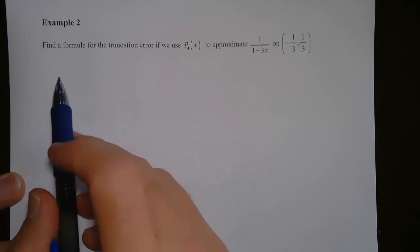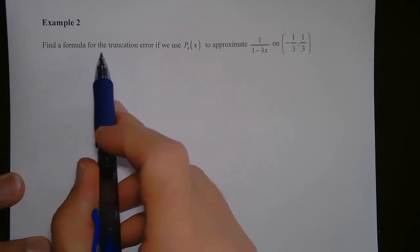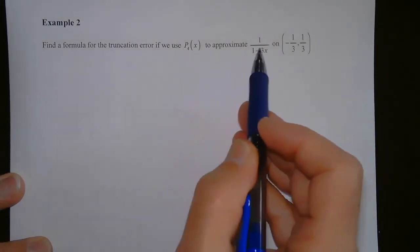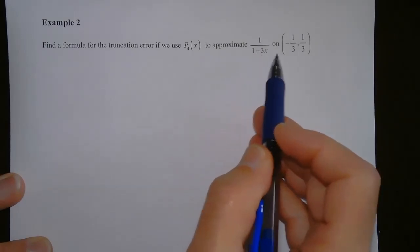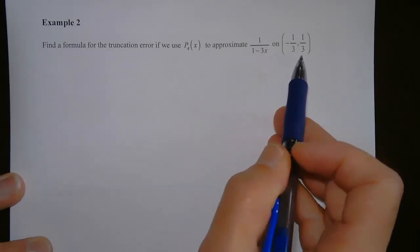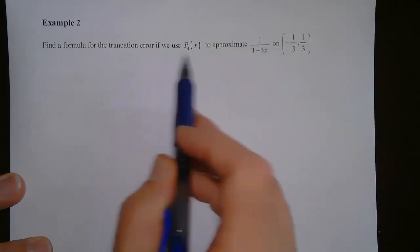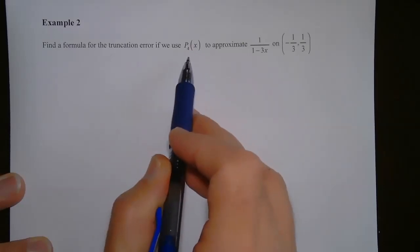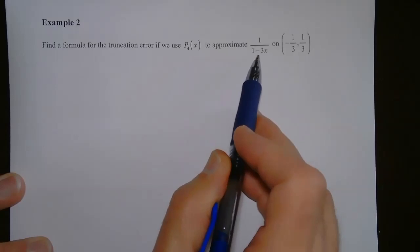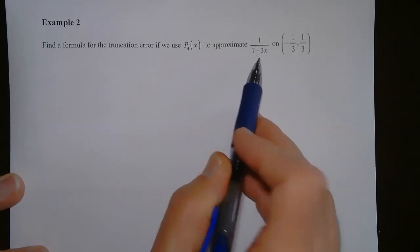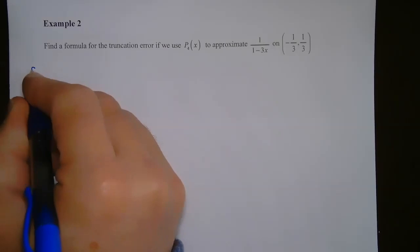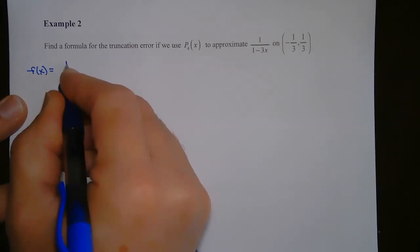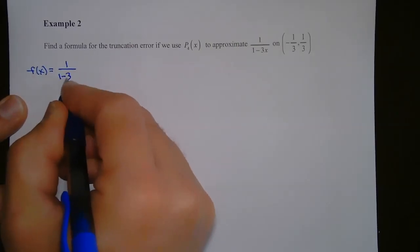For example two, what we want to do is find a formula for the truncation error if we use the fourth order Taylor polynomial to approximate 1 over 1 minus 3x on the open interval negative one-third to one-third. So the truncation error — we want to know the error if we're using a fourth order Taylor polynomial to approximate this function. So this is our f of x, and it's equal to 1 over 1 minus 3x.